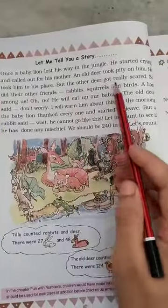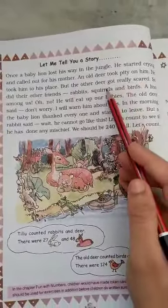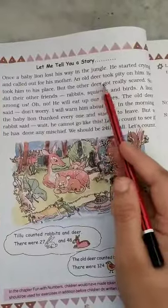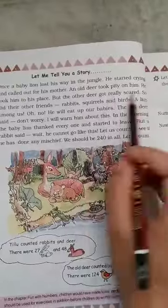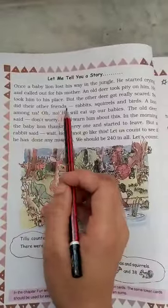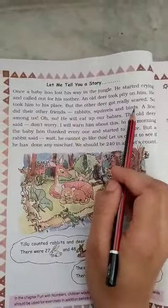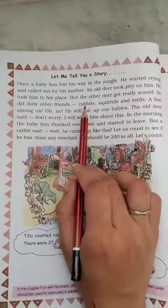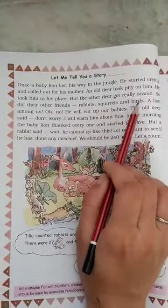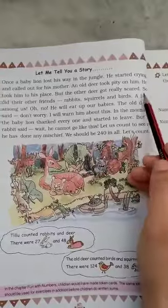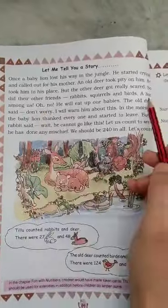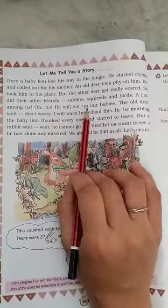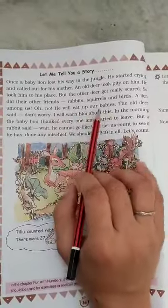But the other deer got really scared, so did their other friends - rabbits, squirrels and birds. They said, a lion among us, he will eat up our babies.